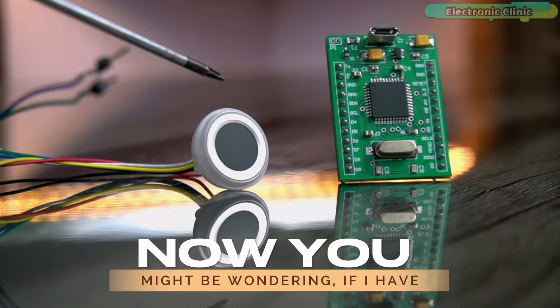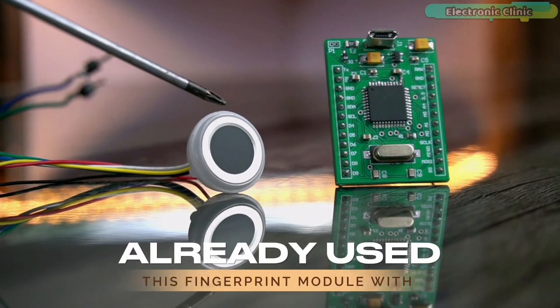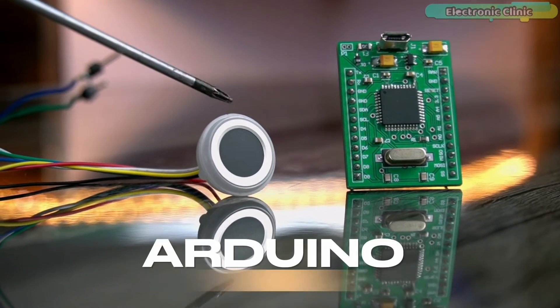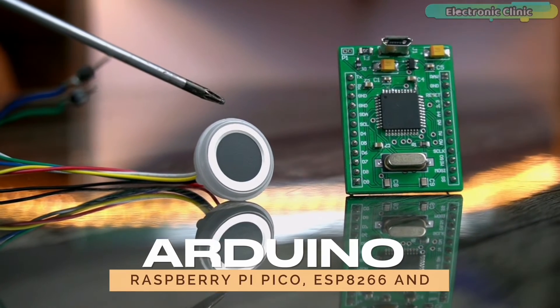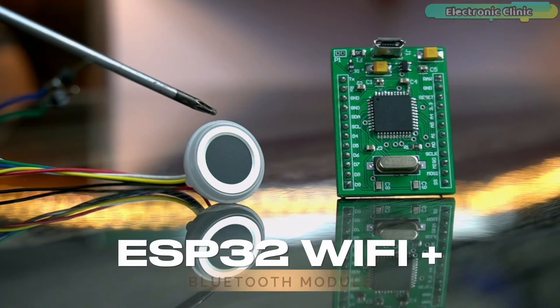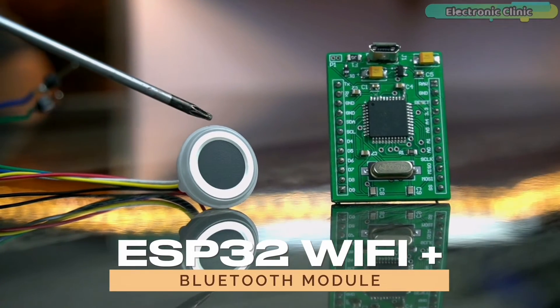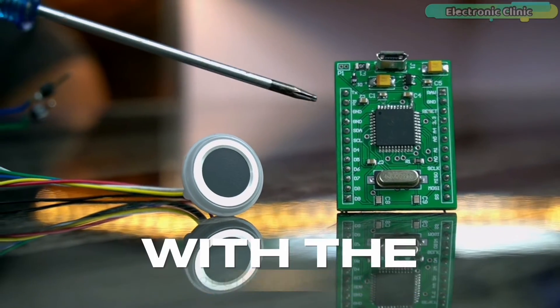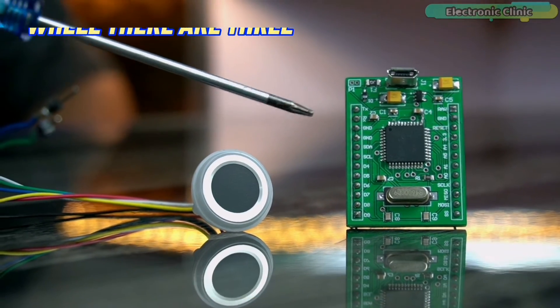Now, you might be wondering if I have already used this fingerprint module with Arduino, Raspberry Pi Pico, ESP8266 and ESP32 Wi-Fi plus Bluetooth module, then why am I using the same fingerprint module with the Arduino Pro Micro? Well, there are three reasons behind it.